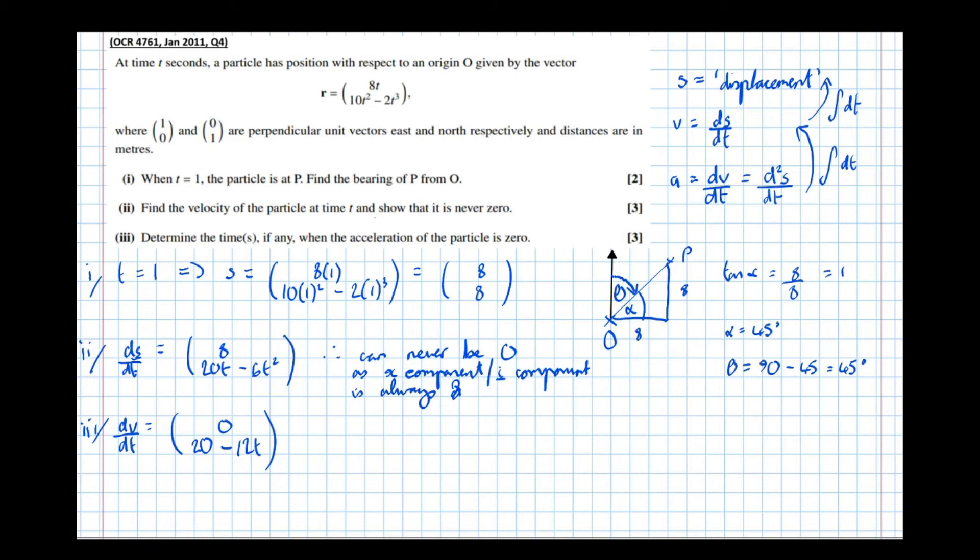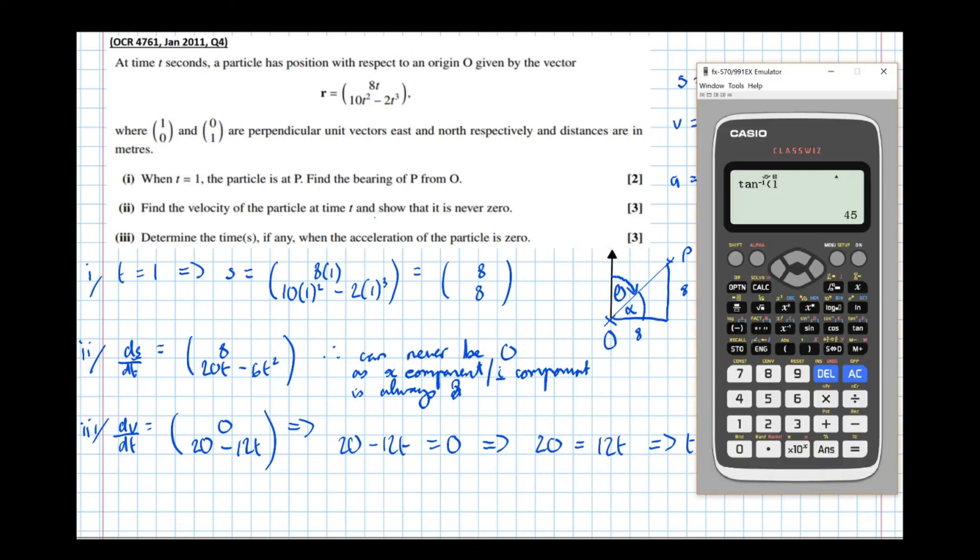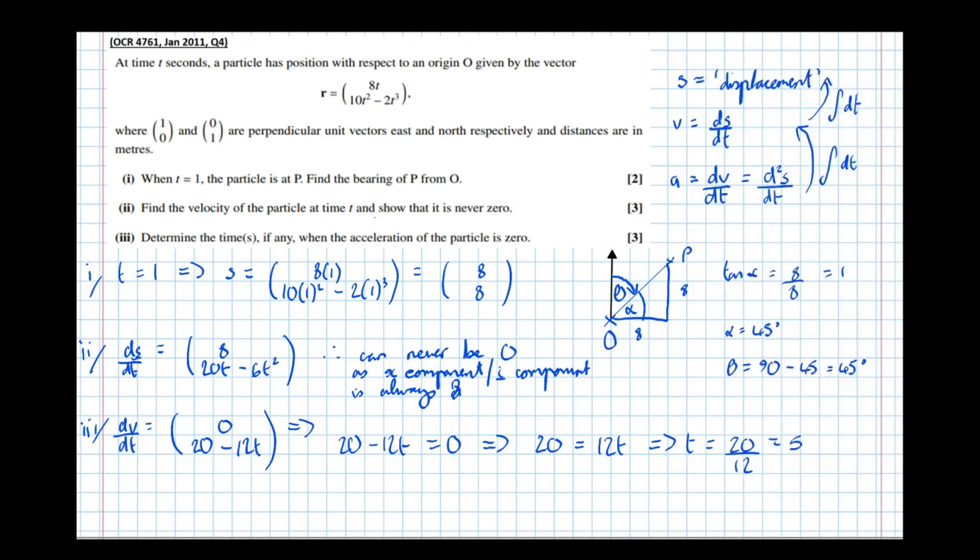We want the time when acceleration is zero. The top component is always zero. For the bottom to be zero: 20 - 12t = 0, which means 20 = 12t, so t = 20/12 = 5/3 seconds. Units are important in mechanics.